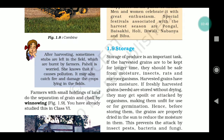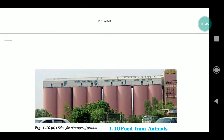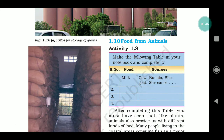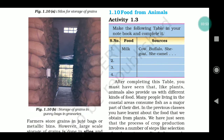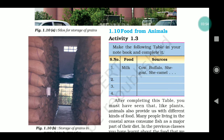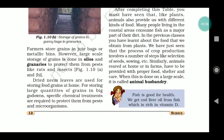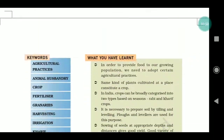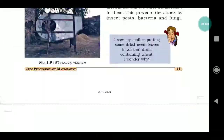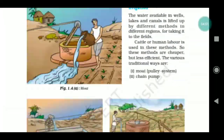How and where we store the crop so that it remains safe and lasts for many days — we will talk about storage. And that covers agriculture. Finally, we will also briefly discuss food from animals — the food that we get from animals.